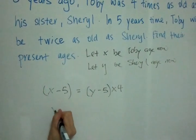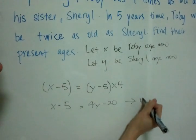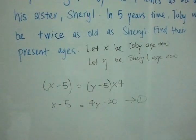Okay, so the first equation is X minus five equals four Y minus twenty. This will be our first equation. Now for the second equation.